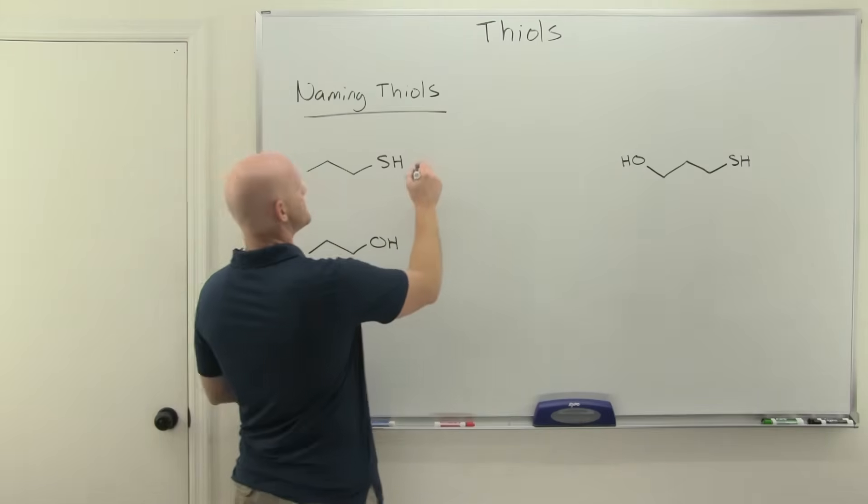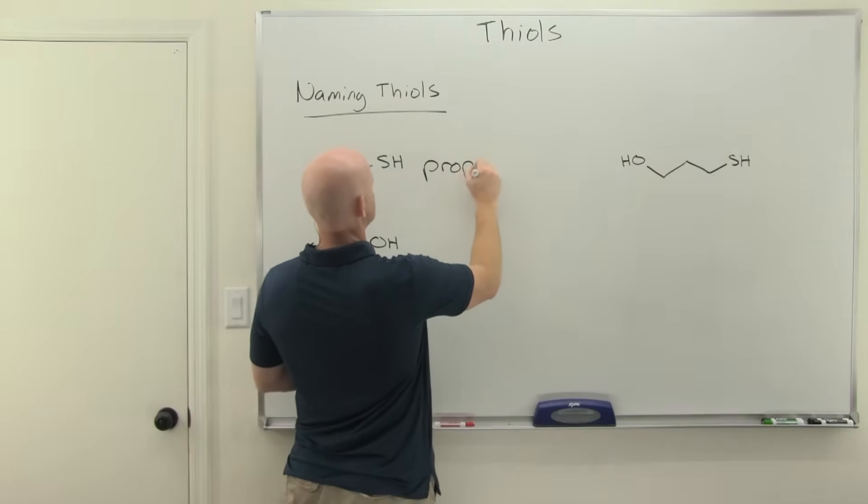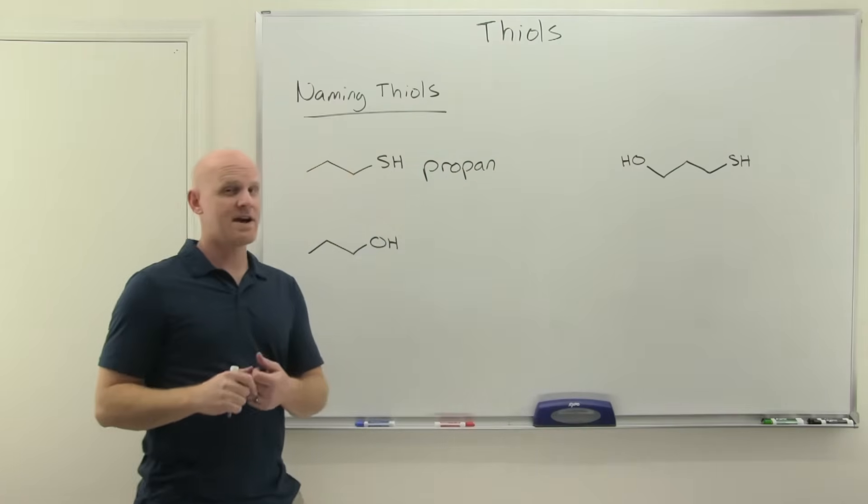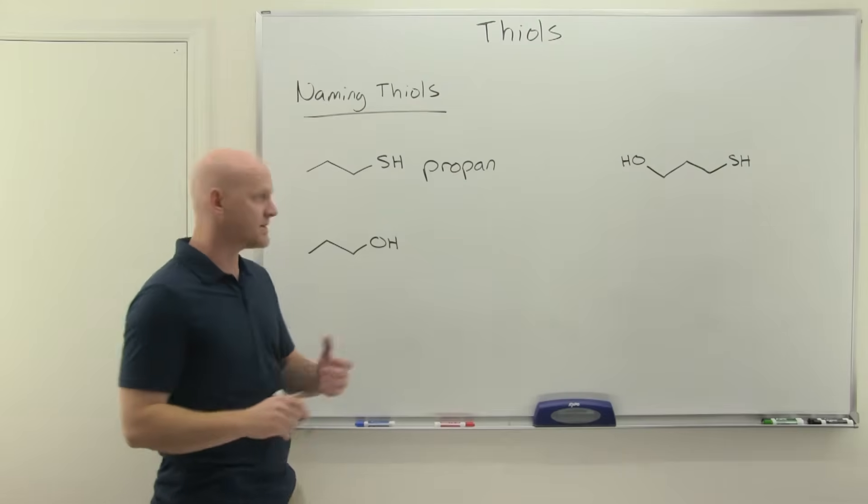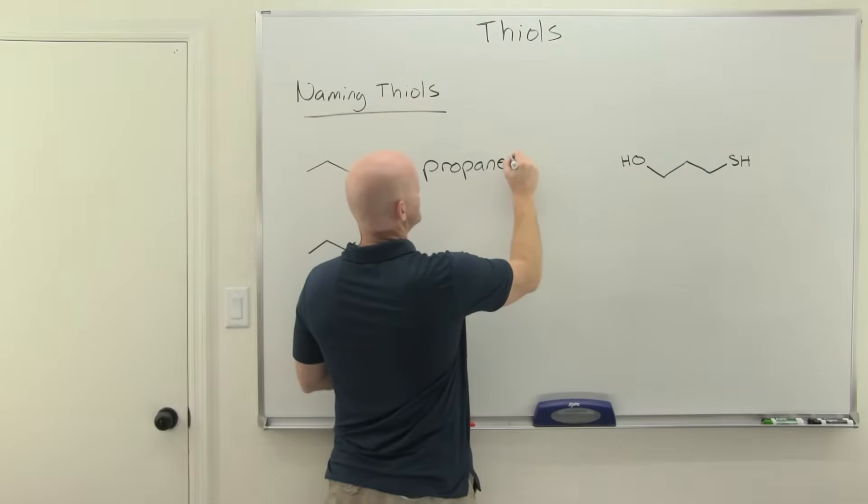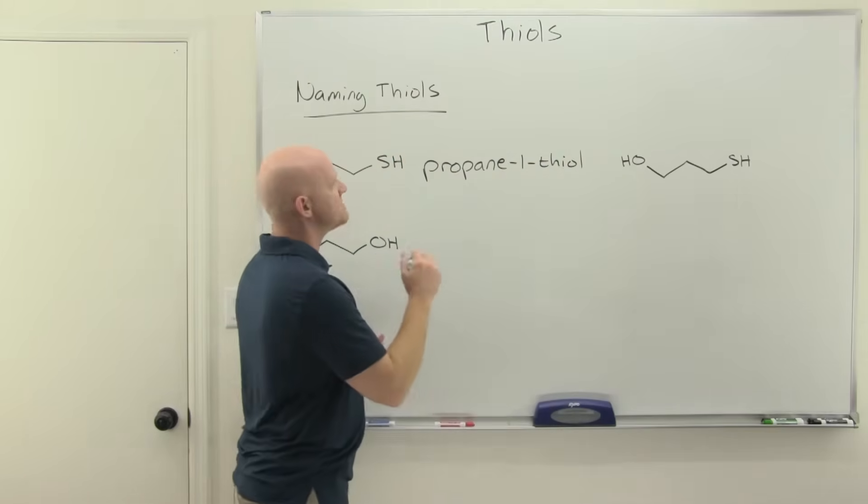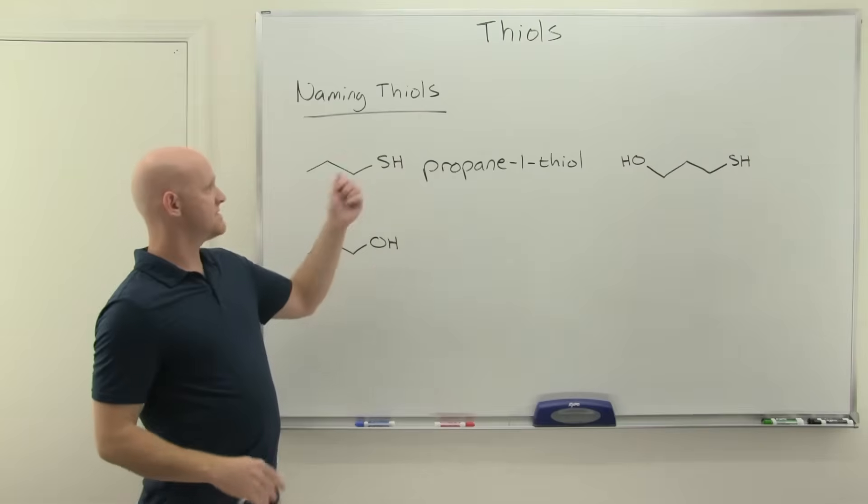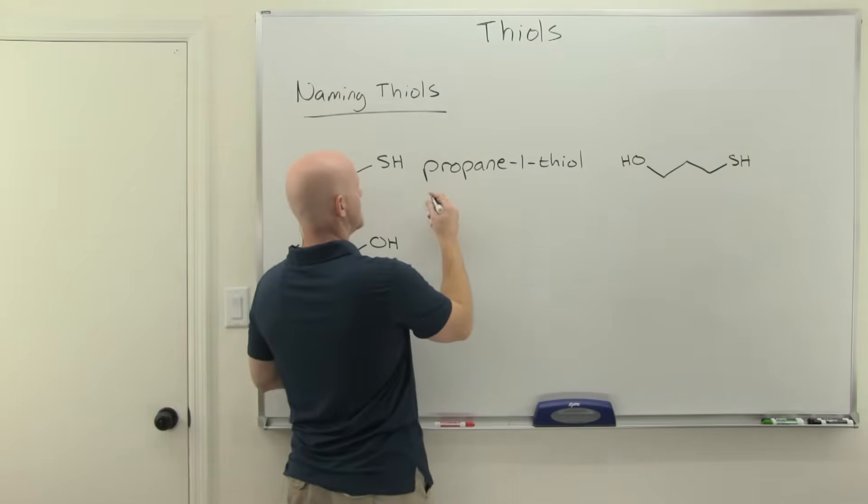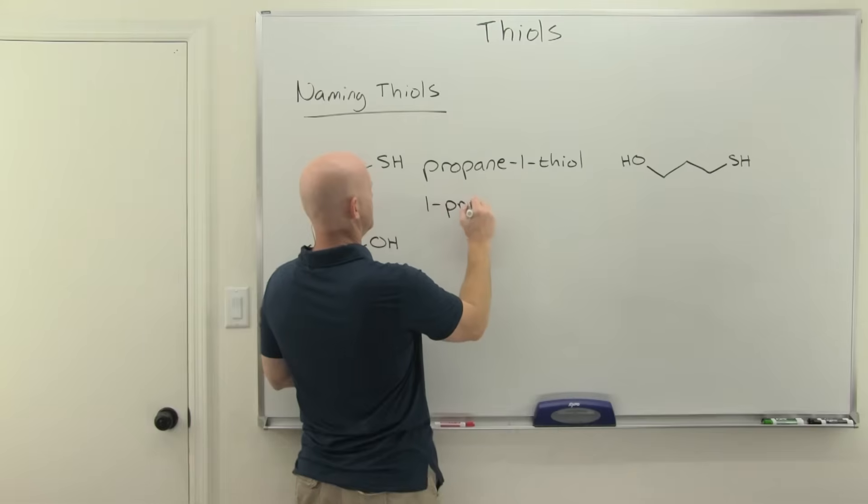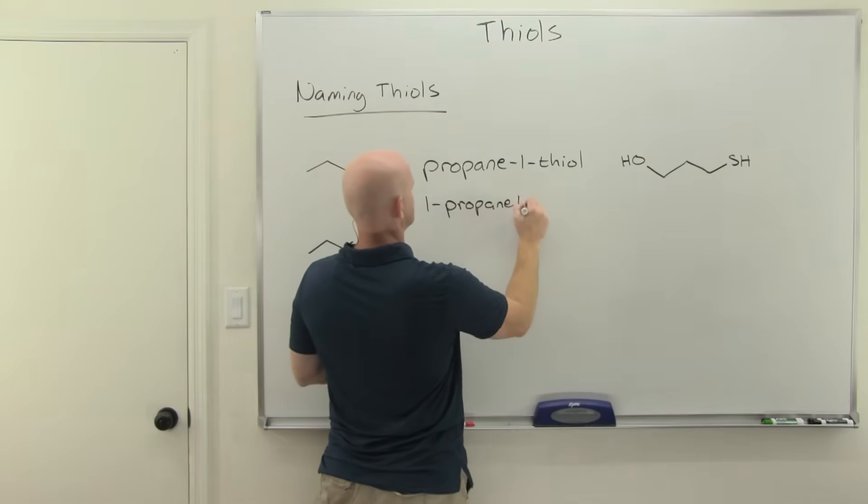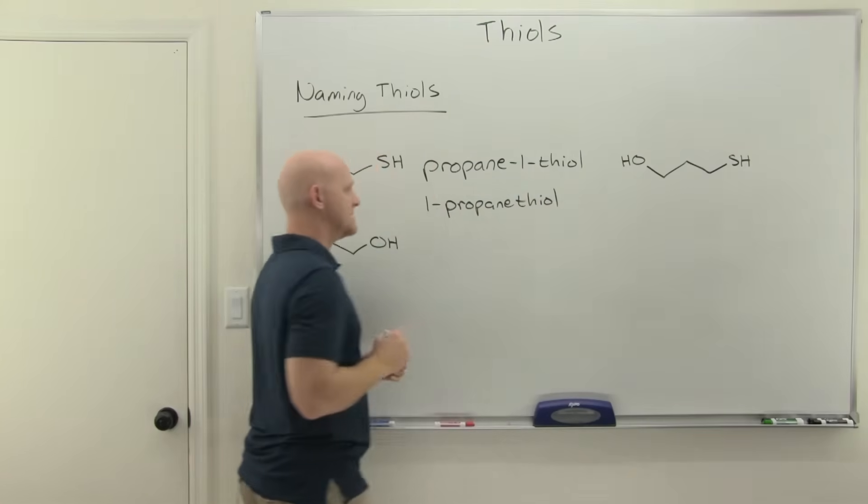Notice if we had this three carbon alcohol here, this would be propan-1-ol or 1-propanol. Well, same thing here: this is going to be propane, but since thiol begins with a consonant sound not a vowel sound, we keep the E. So propane-1-thiol, or since the thiol is the only functional group that's part of the parent chain, we can put the 1 out front and call it 1-propanethiol.